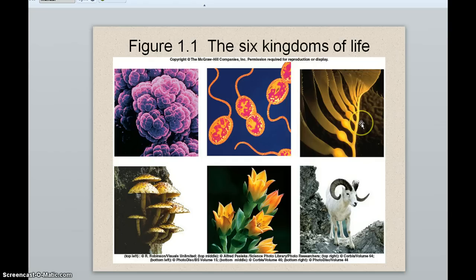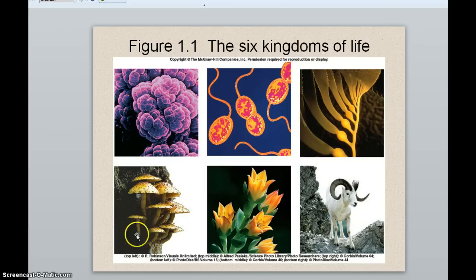Then we have the kingdom called protista. These next four kingdoms all have nuclei in their cells. Protista are usually single-celled organisms that are nucleated, and they may be made up of undifferentiated or differentiated masses of cells like sponges, but they do not have differentiation of tissues. Then we move to fungi, which many people confuse with plants because they're normally sedentary. But fungi are not plants — they do not make their own food. They get their food from the decomposition of other living things, or sometimes from living organisms.